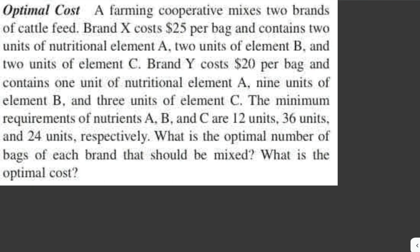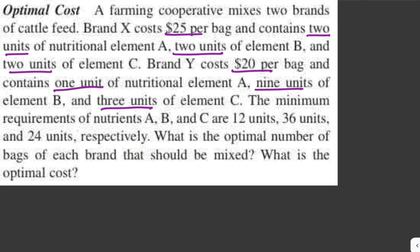A farming operative mixes two brands of cattle feed. Brand x costs $25 per bag and contains two units of nutritional element a, two units of element b, and two units of element c. Brand y costs $20 per bag and contains one unit of nutritional element a, nine units of element b, and three units of element c. The minimum requirements for nutrients a, b, and c are 12 units, 36 units, and 24 units respectively. What is the optimal number of bags of each brand that should be mixed and what is the optimal cost?